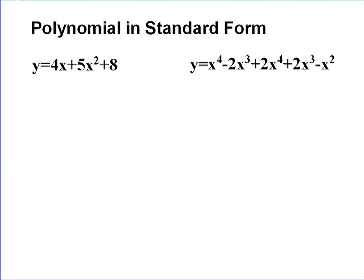Let's start out here on the left. On the left, there are no like terms. There's a term with x, a term with x squared, and a term that's just a constant with no x. None of them are like terms, so we can't add or subtract any of them together.